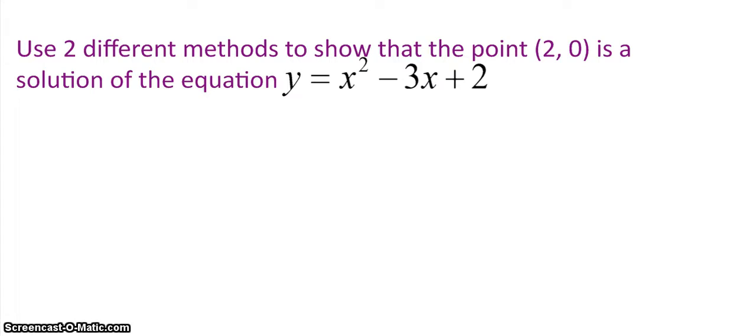I want you to think for a little bit, there's a couple different ways that you can do this. I'm going to have you try on your own to show two different methods, it's okay if they're kind of similar, to try to show that the point (2, 0) is in fact a solution of this equation written right here.